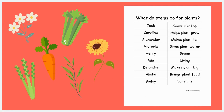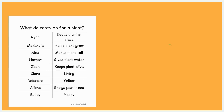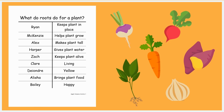Before starting this activity, you will need to write the learning activity question — what do stems do for plants? — at the top of your prediction panel, and gather a variety of stems for the children to observe. Before part two, write the question — what do roots do for a plant? — at the top of your prediction panel and gather a variety of roots for the children to observe.